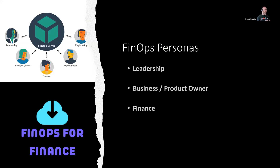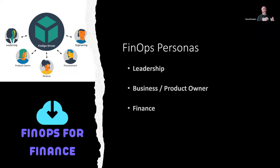Then we have the finance team, whose key responsibility is to accurately budget, forecast, and report on cloud costs. If budgets are running wild, the CFO wants to know why; if forecasts are off, there needs to be a solid explanation. This is where chargeback and showback comes in — taking the single cloud bill and breaking it down to relevant business units, so finance can understand why a department's portion of the cloud bill has gone up or down and whether it's in or out of their control.